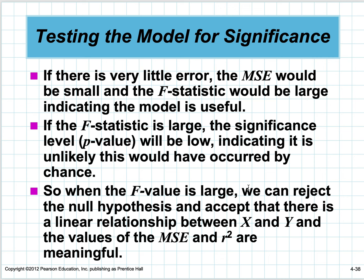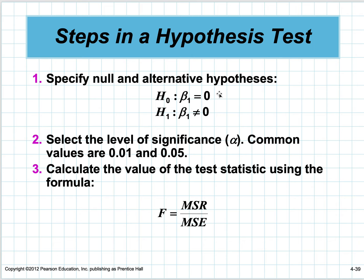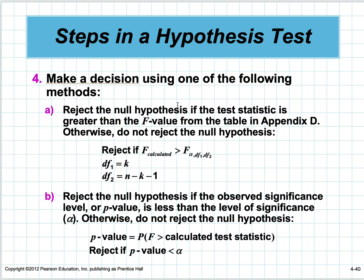When the F-value is large, we can reject the null hypothesis and accept that there's a relationship. The null hypothesis: slope is zero. Alternative: slope is not zero. Common significance levels are 0.01 and 0.05—we use 0.05 for homework. Reject the null hypothesis if the p-value is less than the level of significance alpha.